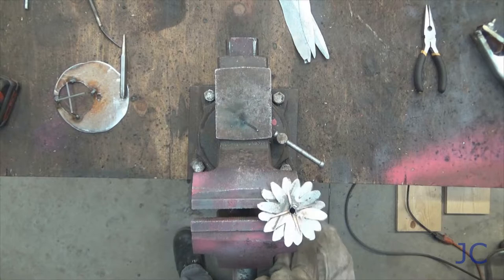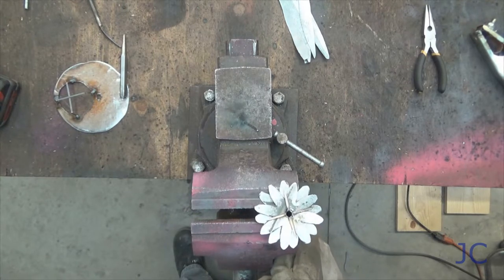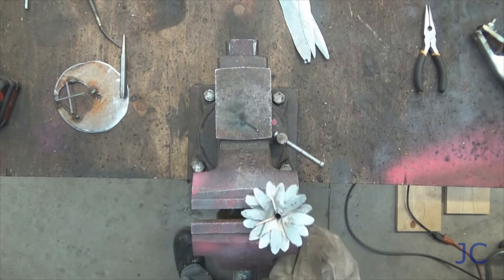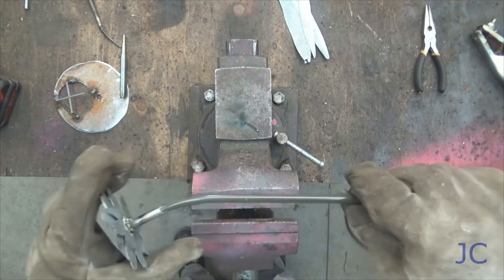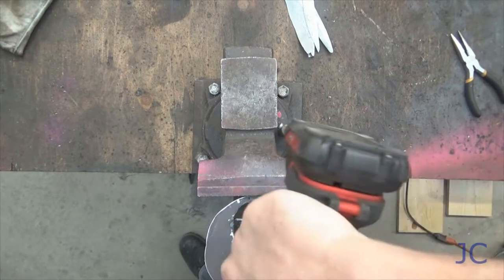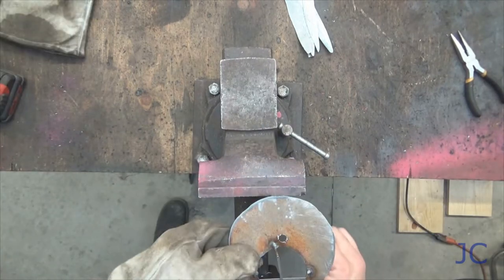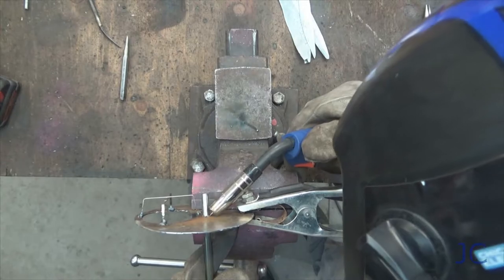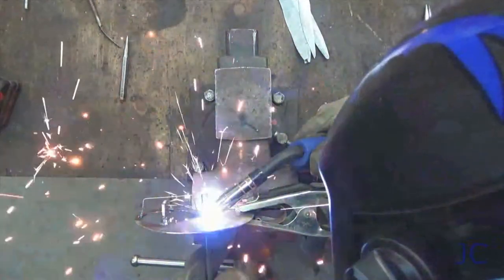If you want to, you can use a vise and give the stem of the flower a little bit of a bend. That way the head of the flower sits up to the side a little bit. We're going to drill a hole in the large round piece of metal. That way we have a place for the stem of the flower to go through. We'll weld that in there.